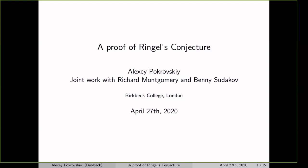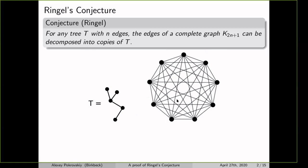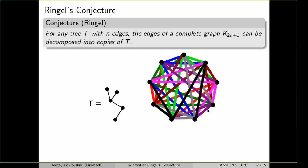I want to tell you about joint work with Richard Montgomery and Benny Sudakov. The whole talk will be about a problem called Ringel's conjecture, which is a problem from graph decomposition. The problem is to decompose a complete graph into edge-disjoint copies of some fixed tree. Imagine you fix a tree with n edges and you have a complete graph on 2n+1 vertices. Ringel conjectured that you can always decompose the edges of the complete graph into copies of the tree. Here's a four-edge tree and a complete graph on 9 vertices — and here's a way of decomposing it into 9 disjoint copies of the tree.